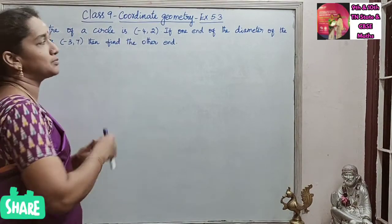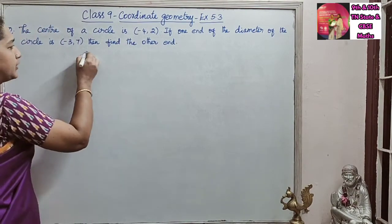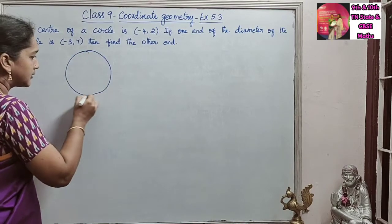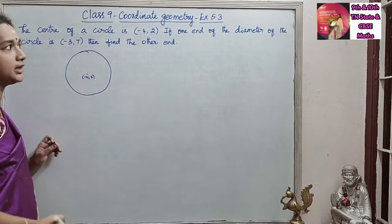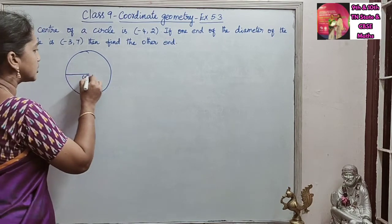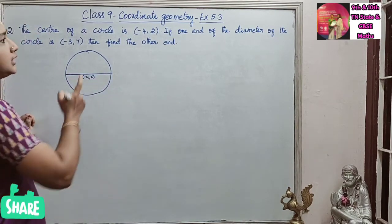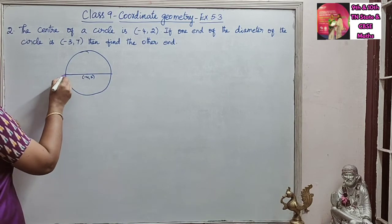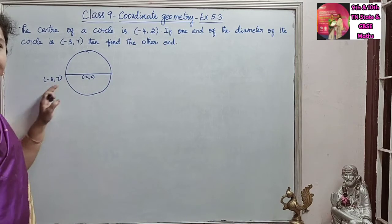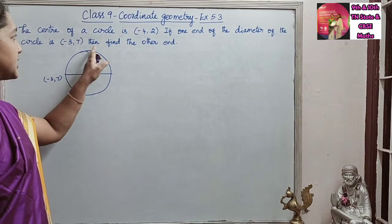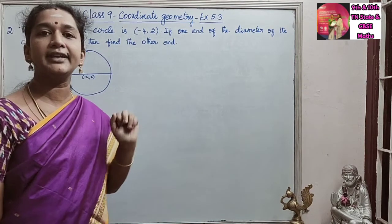The centre of a circle is (-4,2). So if we draw a circle, the centre point of the circle is given as (-4,2). If one end of the diameter, so we have diameter for the circle. For example, one end of the diameter of a circle is (-3,7). So one end of the diameter is (-3,7), then find the other end.